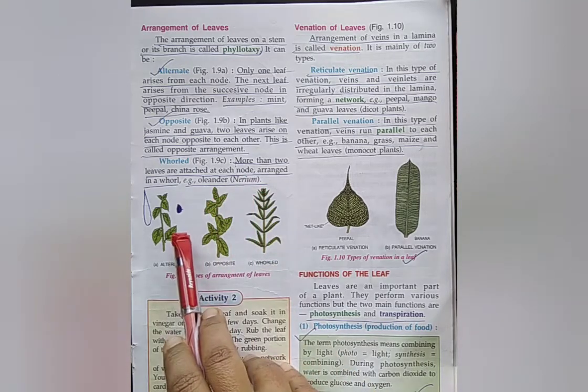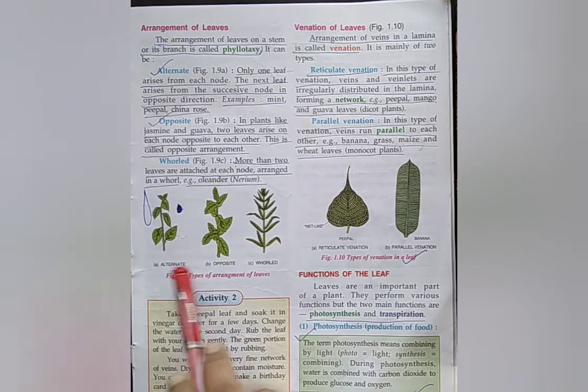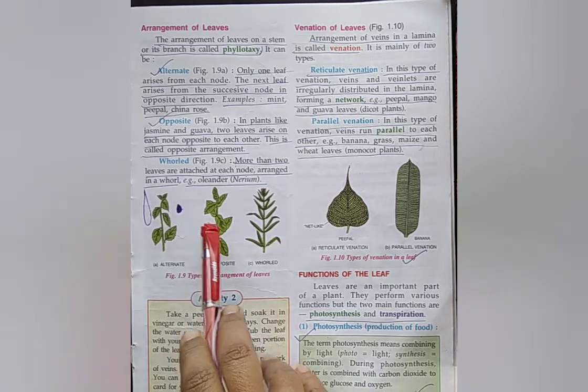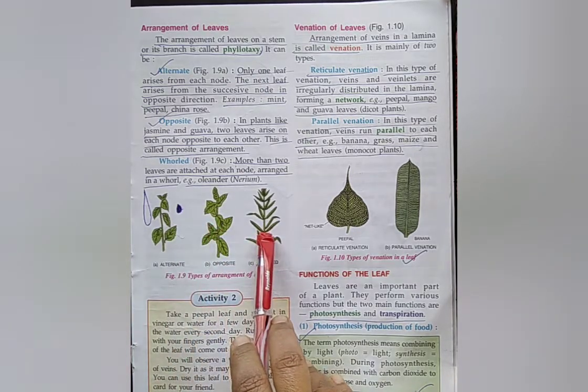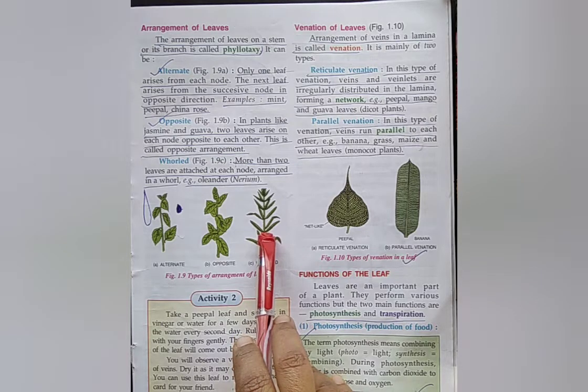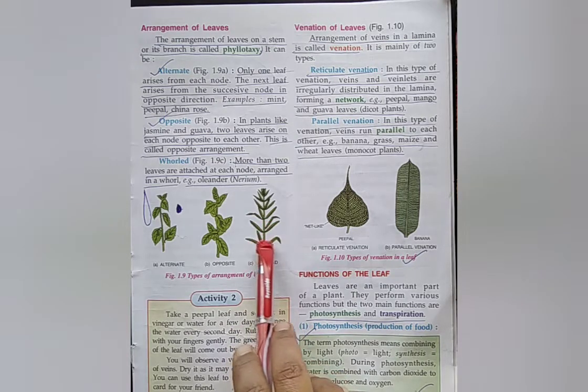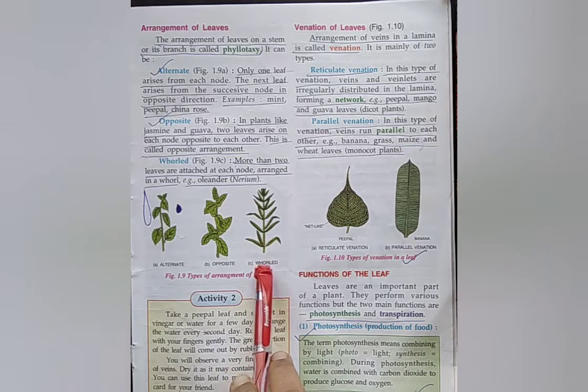What is whorl arrangement? When more than two leaves are attached at each node, this type of arrangement is called whorl arrangement. Example: Oleander, nerium.